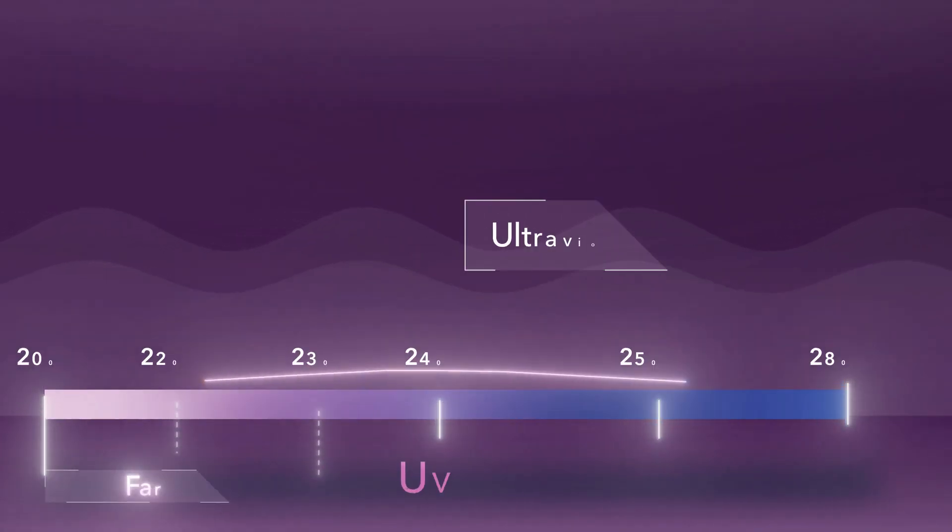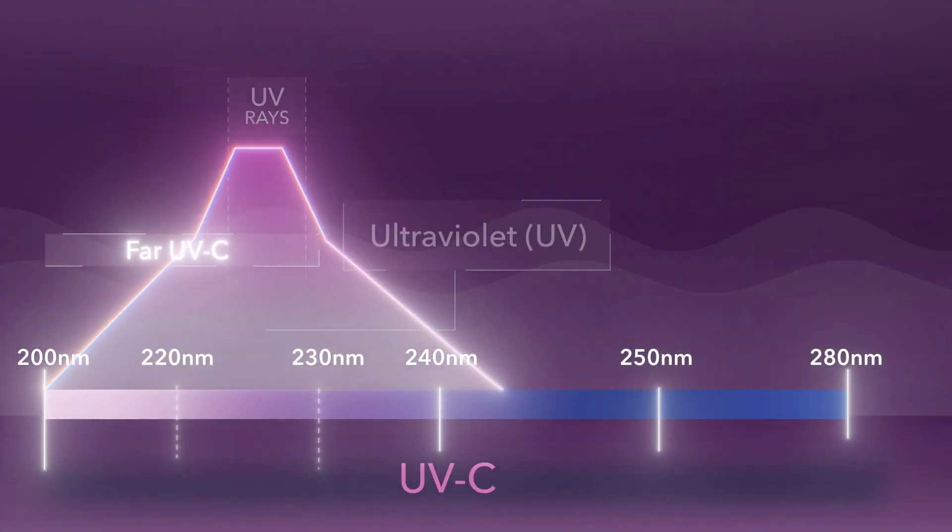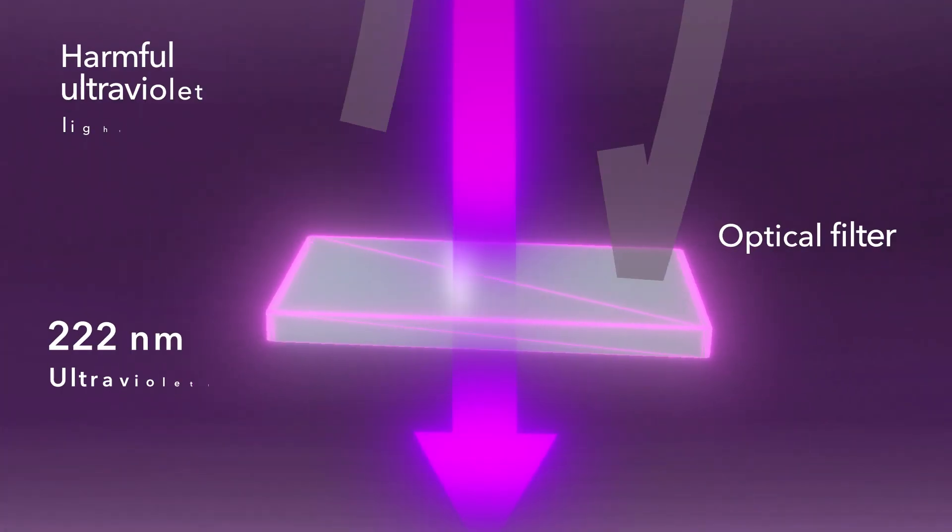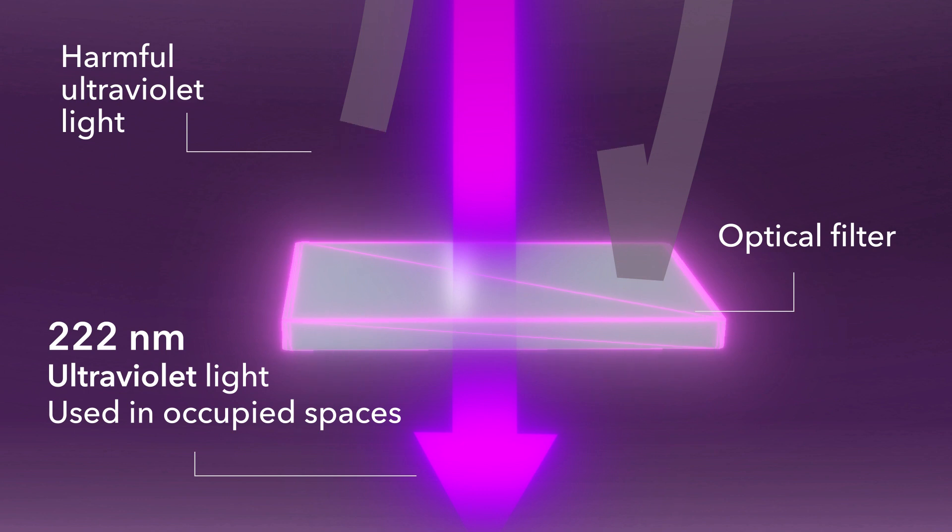Our far UV-C light sources operate at a different wavelength than normal UV-C lights and include an optical filter, making CARE-222 technology the first UV-C light module that can safely be used with people present.